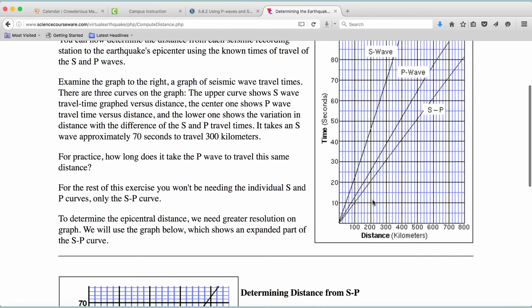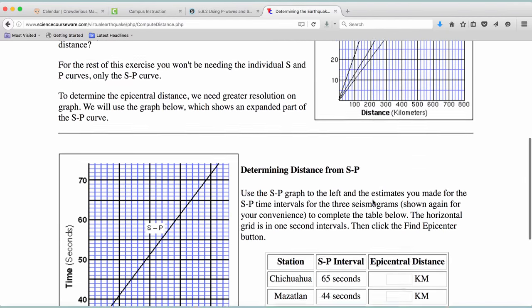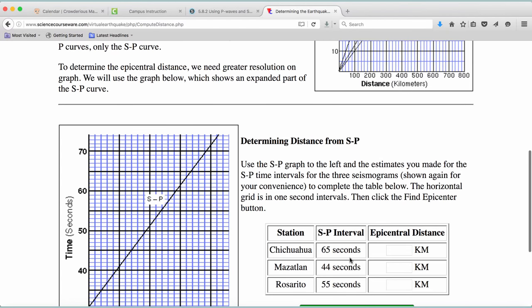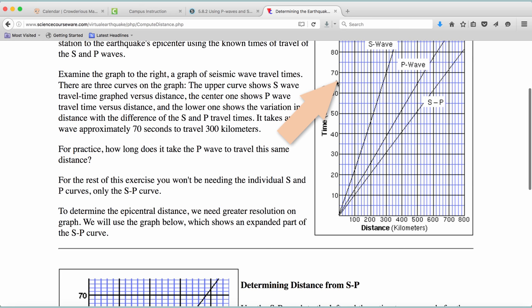Now, you're on this page with the time lag graphs. So, since Chihuahua has 65 seconds for a time lag, you can just use their line labeled S minus P. Go up to 65 seconds and out to where the line crosses that time and look down on the x-axis for the distance. I get 640 kilometers for Chihuahua's distance to the epicenter.